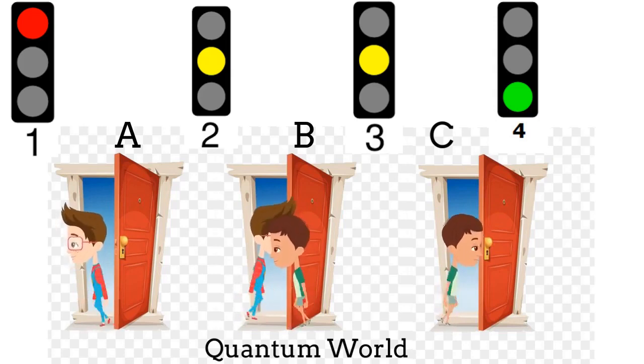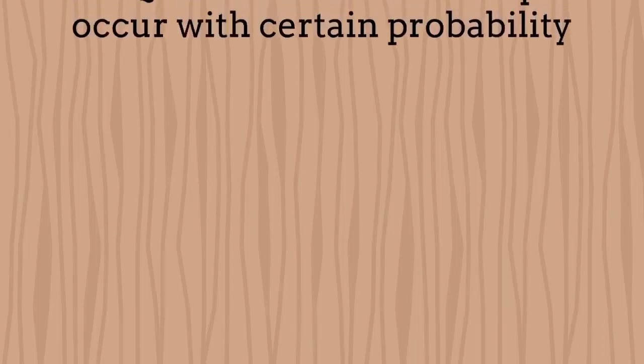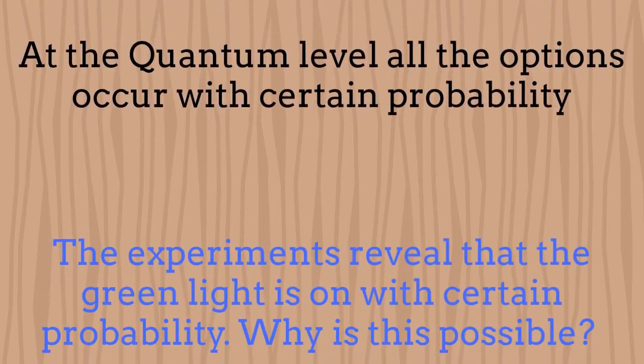Then if we send Richard and Michael to cross the same doors many times, sometimes the red light would be activated. Sometimes the yellow light would be activated. Unsurprisingly, sometimes the green light, namely the one associated to the fact that both kids cross the door B would be also activated. Then at the quantum level all the lights are activated with certain probability. But why is it possible for the green light to be activated even if it is impossible for Michael and Richard to cross the same doors simultaneously?